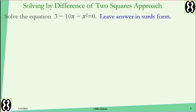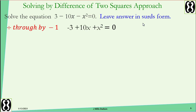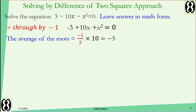Now look at this example. This approach works well when the coefficient of x squared equals one, but here it is negative one. We must manipulate the expression by dividing through by negative one. When you do that you get negative 3 plus 10x plus x squared equals zero. Now we can begin: b is 10, divided by negative 2 gives negative 5. Use negative 5 to create root expressions: negative 5 plus k and negative 5 minus k.